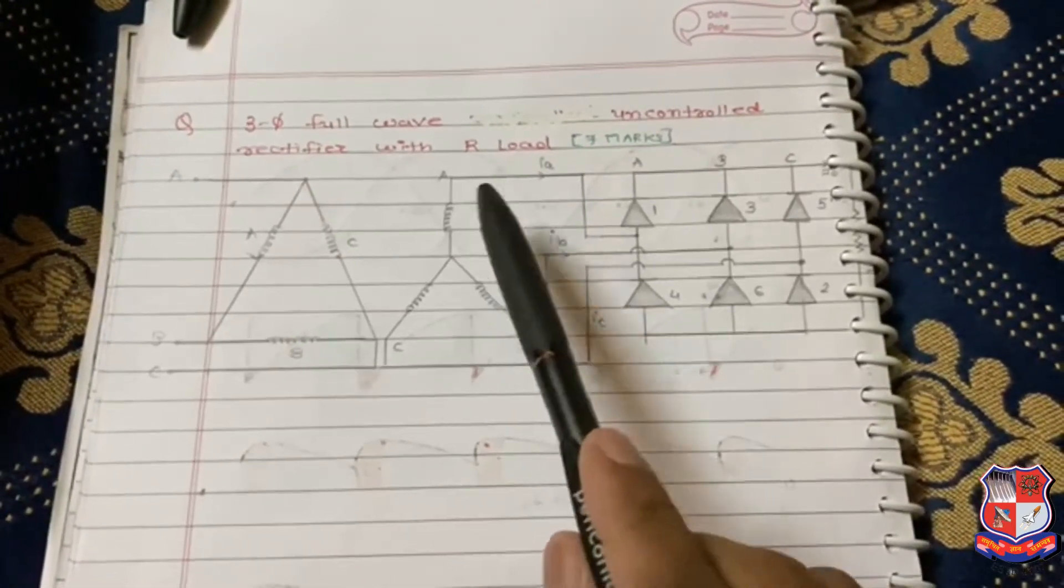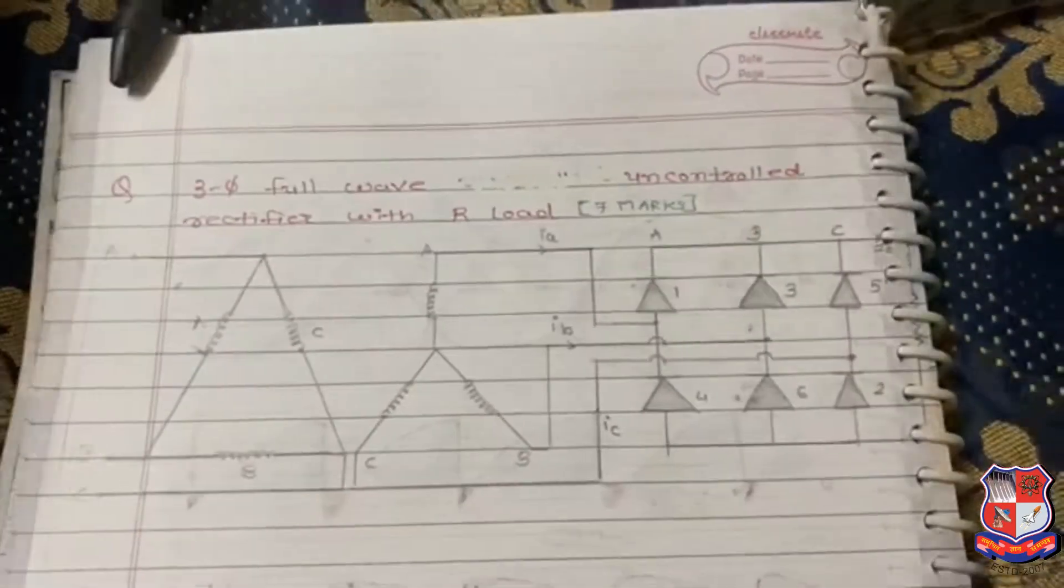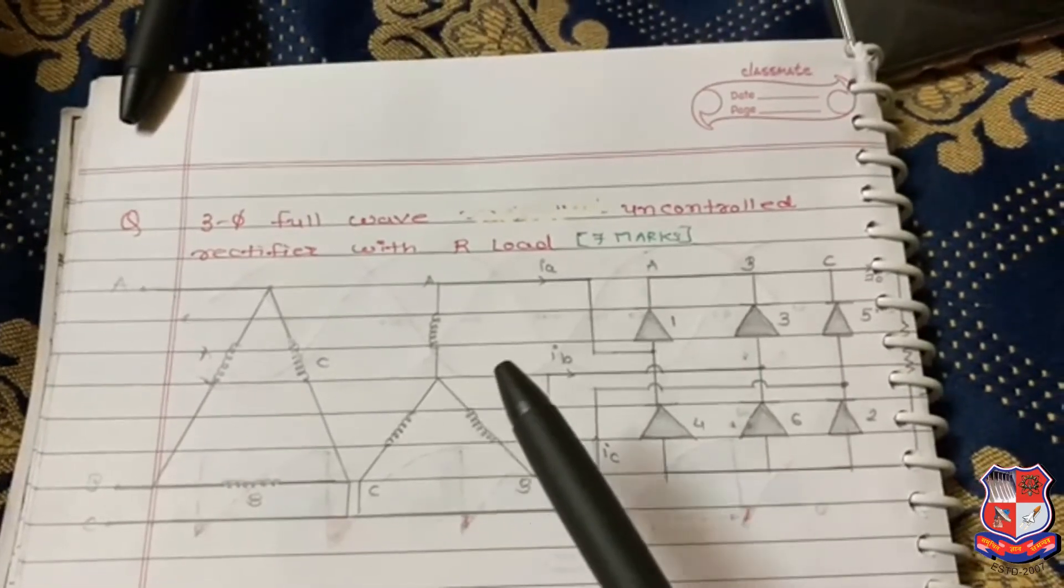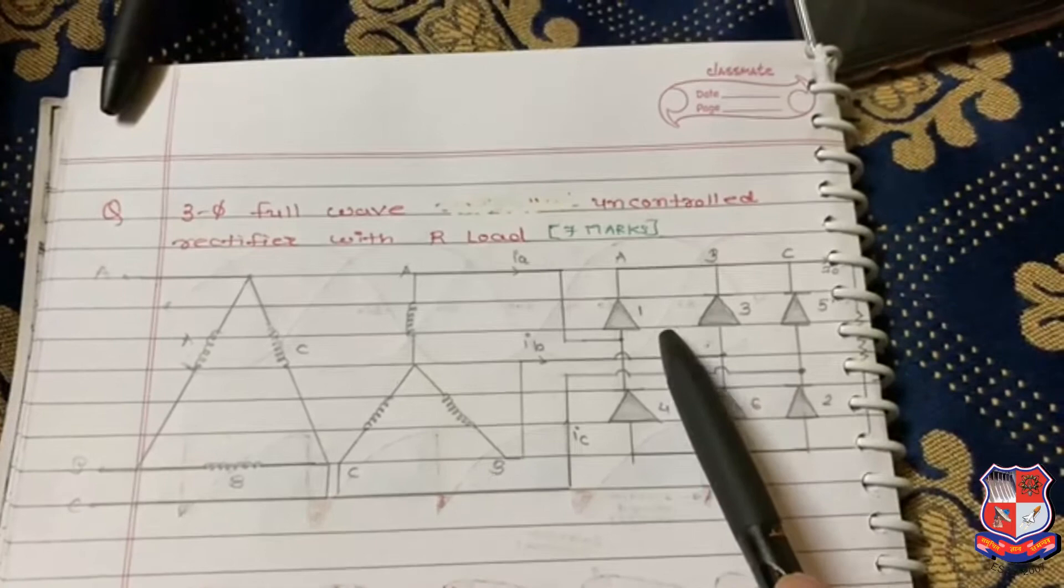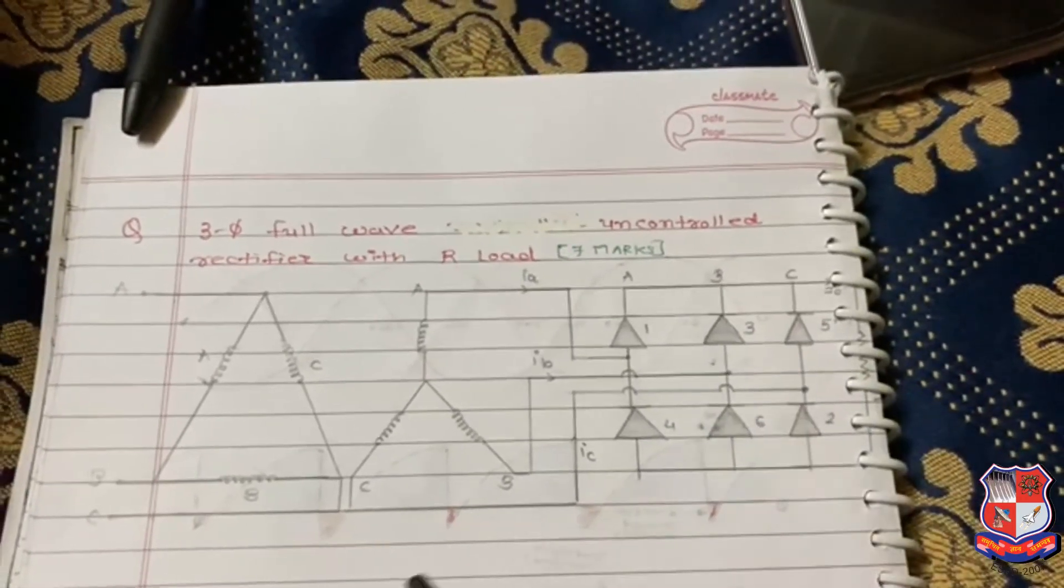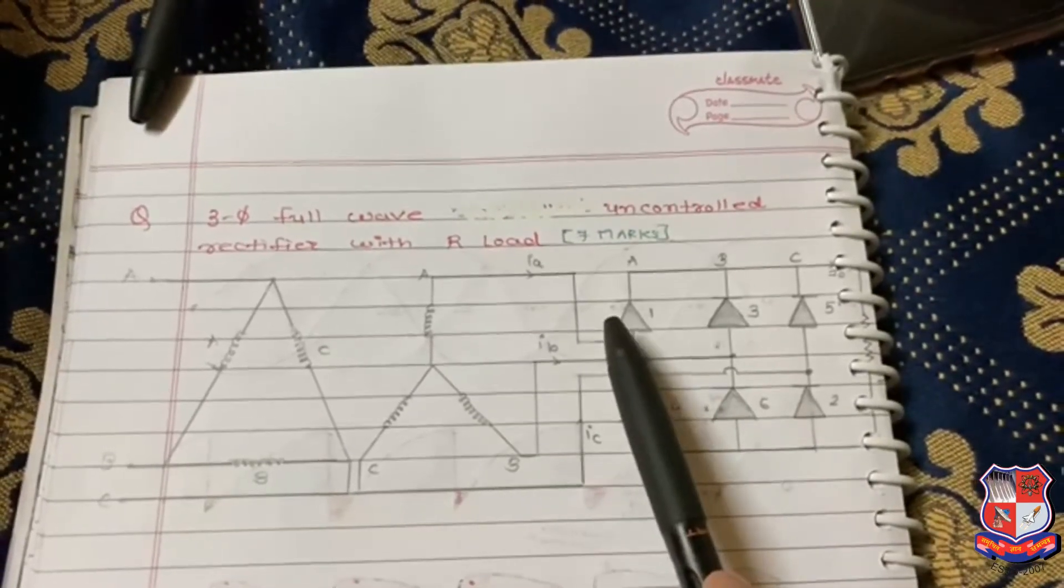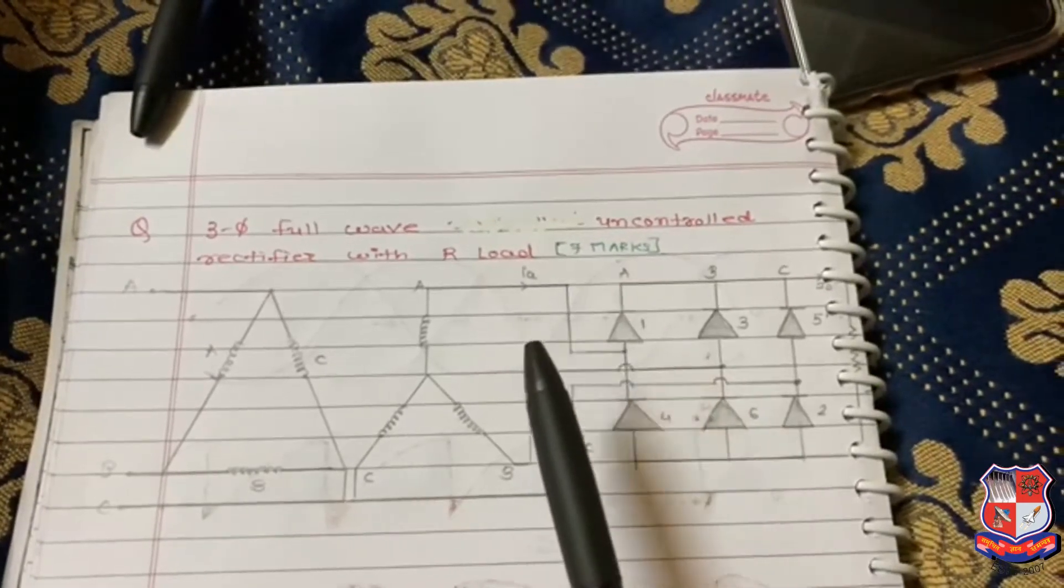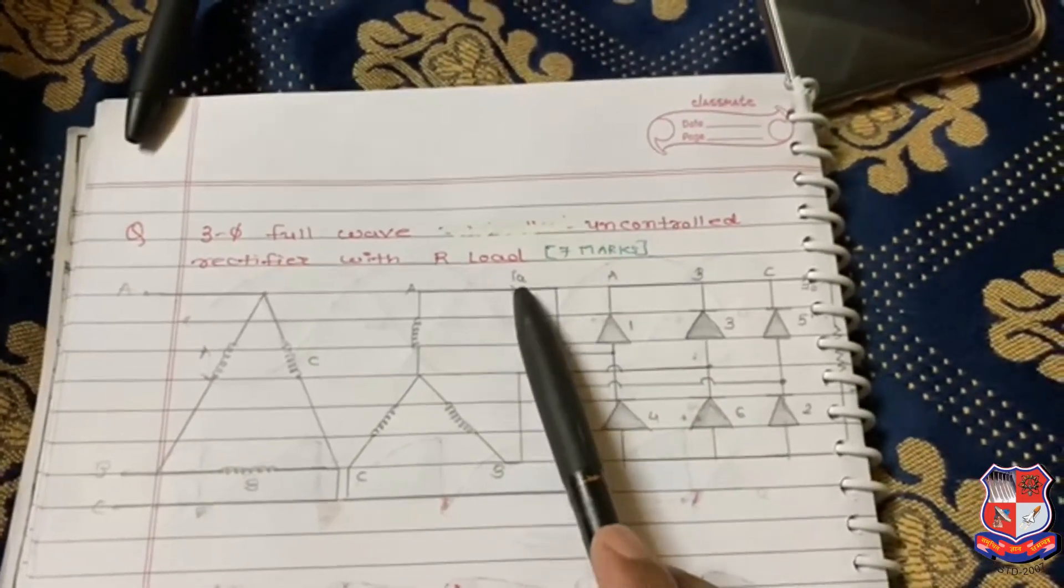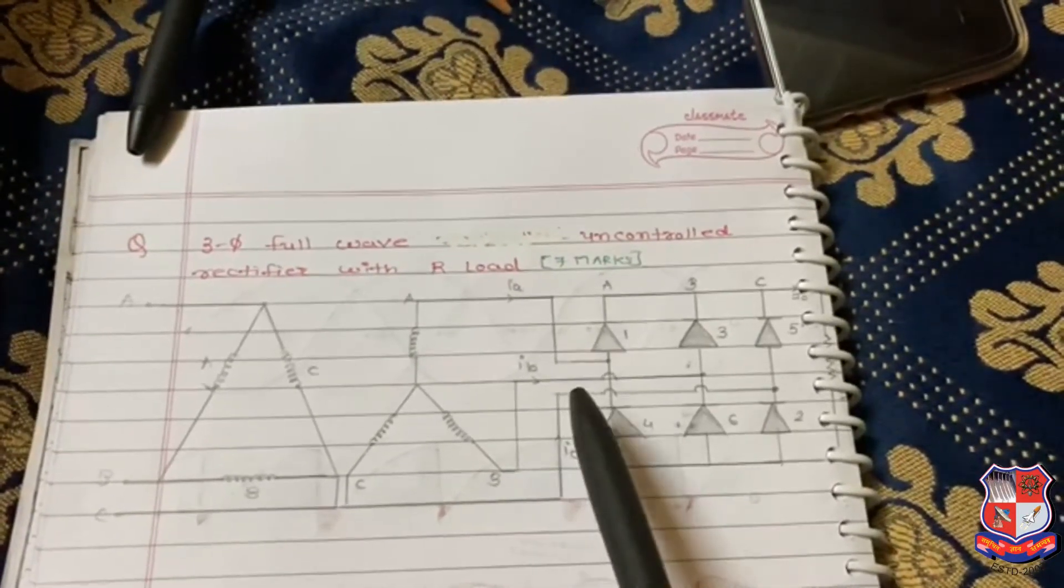In three-phase full wave rectifier, we have to draw the waveform output voltage waveform in form of line voltage. For every 60 degree interval, two switches will turn on. This is the line current Ia, line current Ib, and line current Ic.